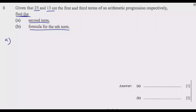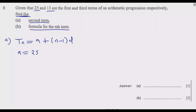To answer part a, we use the general formula for an arithmetic progression: tₙ = a + (n − 1)d, where d is the common difference. We know that the first term a is equal to 25. However, we cannot find the second term without knowing d, and d is currently unknown.